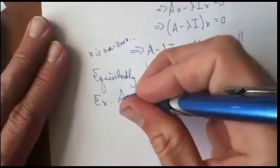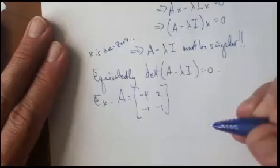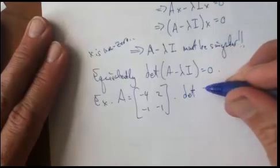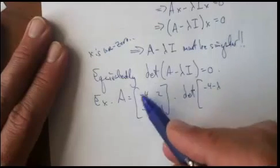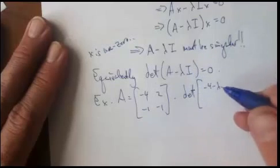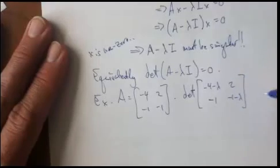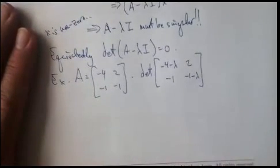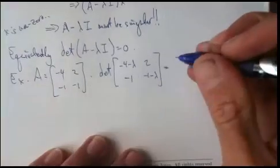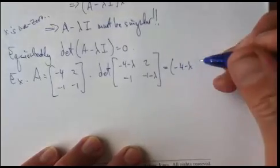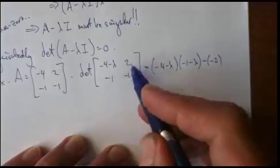Here's an example, let's say A is this matrix, negative 4, negative 1, 2, negative 1. Then the determinant of negative 4 minus lambda, because I'm taking the matrix A minus lambda times I, so I'm going to take off lambdas along the diagonal there, 2, negative 1 minus lambda. I'm going to take the determinant of that. The determinant of a 2 by 2 is just the product this way minus the product that way, so this determinant is negative 4 minus lambda times negative 1 minus lambda minus negative 2, that's 2.